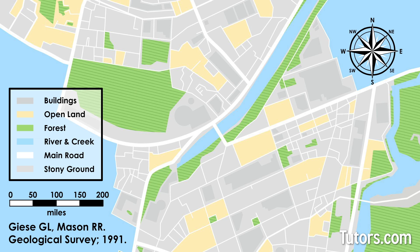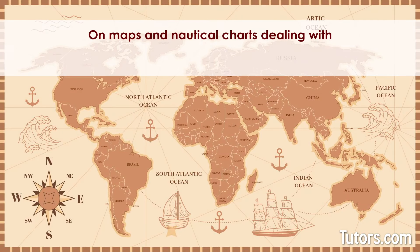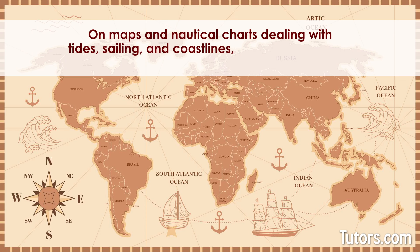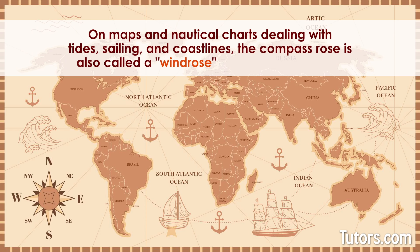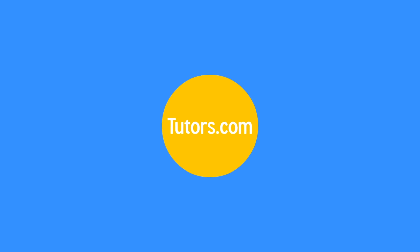By tradition, most maps are oriented so that north is at the top of the map. On maps and nautical charts dealing with tides, sailing, and coastlines, the compass rose is also called a wind rose, or rose of the winds.